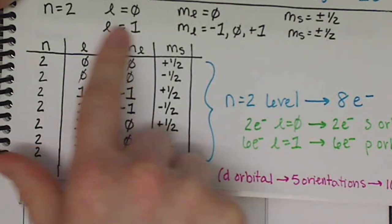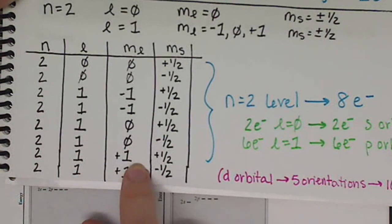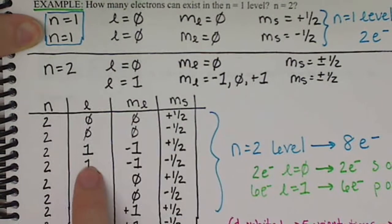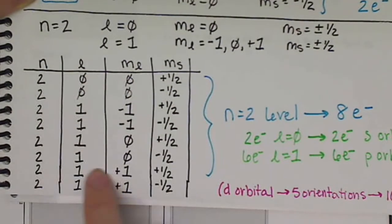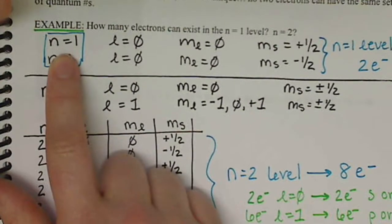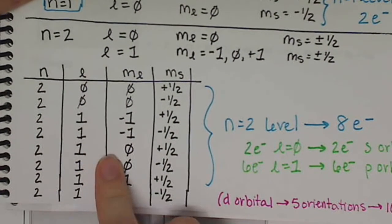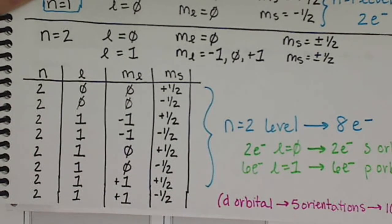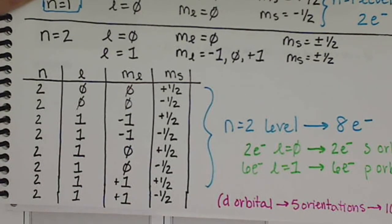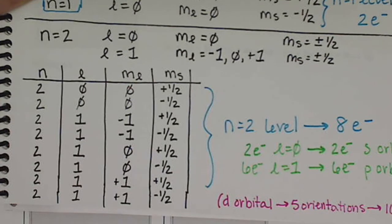Now we only went to the n equals 2 level, and we went from n equals 1 to n equals 2, and it got very complicated compared to the simplicity of n equals 1. It gets much more complicated as well when you go to the n equals 3 level because you also have d orbitals that you can deal with, and there are 5 d orbitals that you have to worry about.